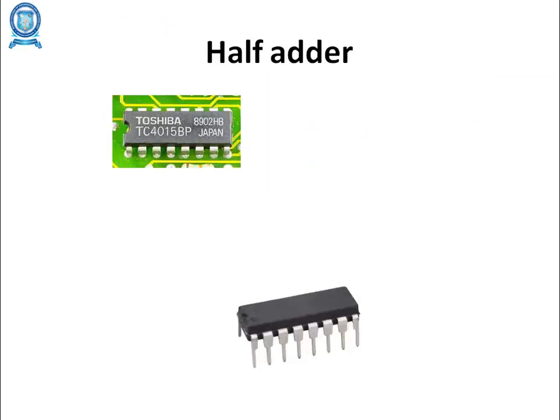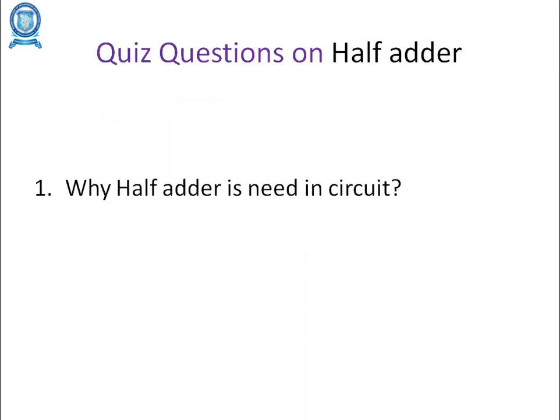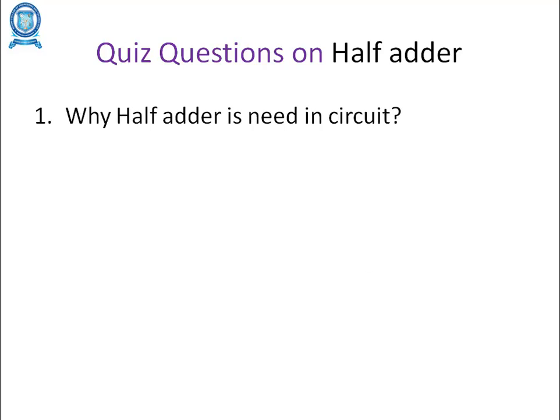Why is a half adder needed in a circuit? The half adder is used to add two binary numbers, A and B. The binary numbers are added together and give outputs of sum and carry. The block diagram represents the sum and carry outputs with inputs A and B.